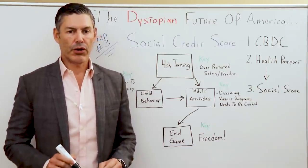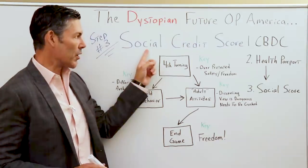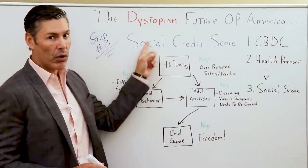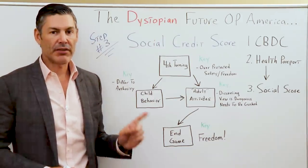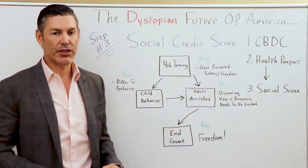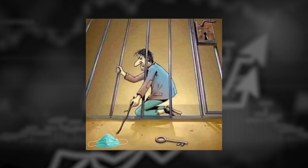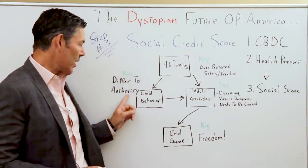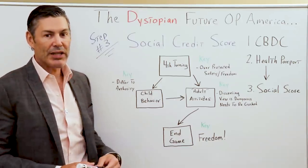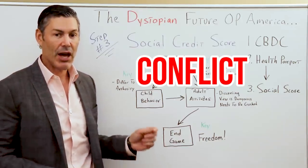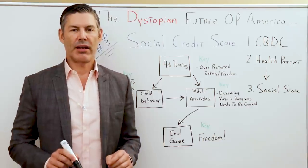We use the Fourth Turning as a starting point to determine the probabilities that we have this social credit score playing a big role in the dystopian future of America. But we need to take it a step further — it's not just that there's a generation that values safety more than freedom. It's also how they dealt with authority when they were being raised, specifically how they dealt with conflict and used authority when growing up in school.